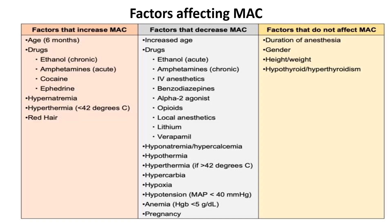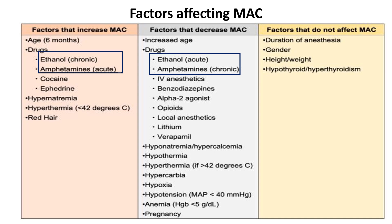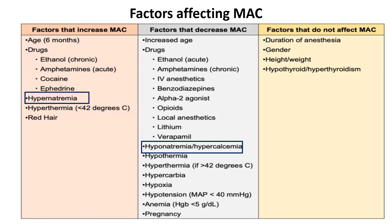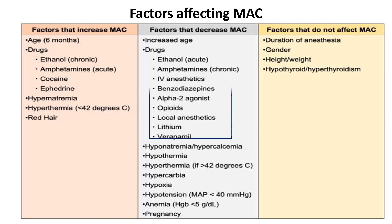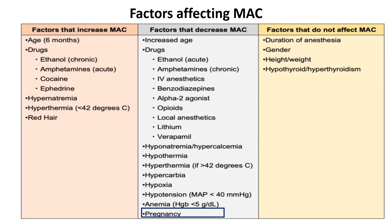This table depicts all the factors affecting MAC. Stimulants such as cocaine and ephedrine can elevate the MAC because a higher anesthetic concentration is required to counteract their stimulant effects. Drugs like alcohol and amphetamines have dual effects. Chronic alcohol consumption increases the MAC, whereas acute alcohol intoxication reduces it. Acute amphetamine use causes an increase in the MAC, while chronic use can lead to a decrease. Hyponatremia can reduce the MAC because lower sodium levels may depress central nervous system activity, whereas hypernatremia has the opposite effect. Sedative medications such as benzodiazepines, propofol, and opioids reduce the MAC. Pregnancy also reduces the MAC for inhaled anesthetics.